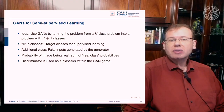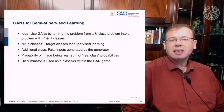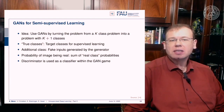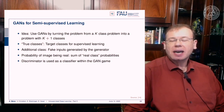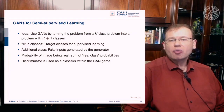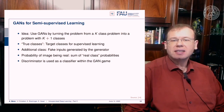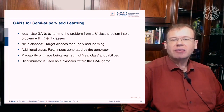You can also use GANs for semi-supervised learning. The idea is to turn a k-class problem into a k+1 class problem: the true classes are the target classes for supervised learning, and an additional class covers fake inputs generated by G. The probability of being real is the sum of all real classes, and the discriminator is used as a classifier within the GAN game.